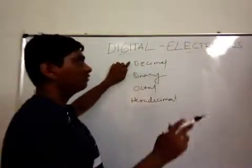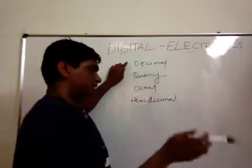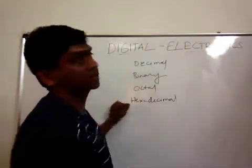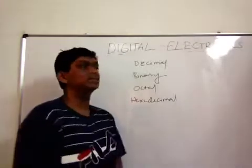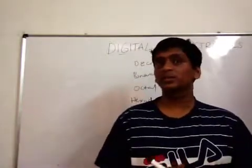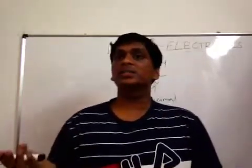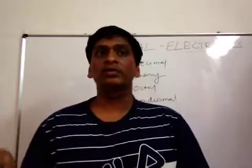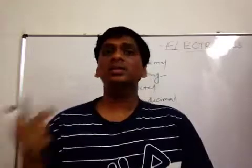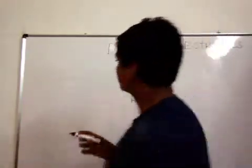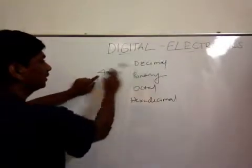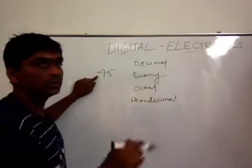Whenever you are converting a decimal number into binary, octal, or hexadecimal, it is just dividing the number with the proper radix. When converting a decimal number into a binary number, you divide by two because the radix of binary is two. So my decimal number is 45 and I have to convert it into binary.